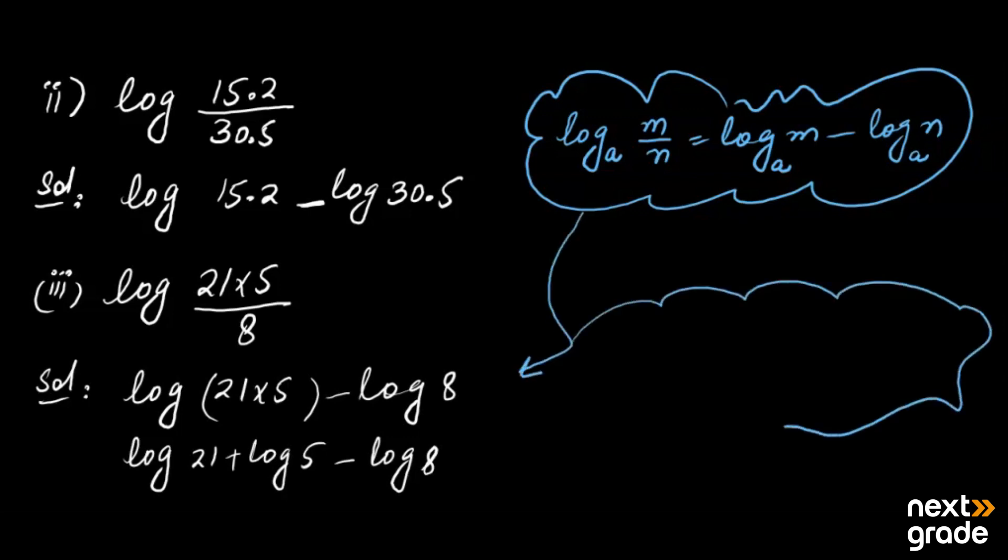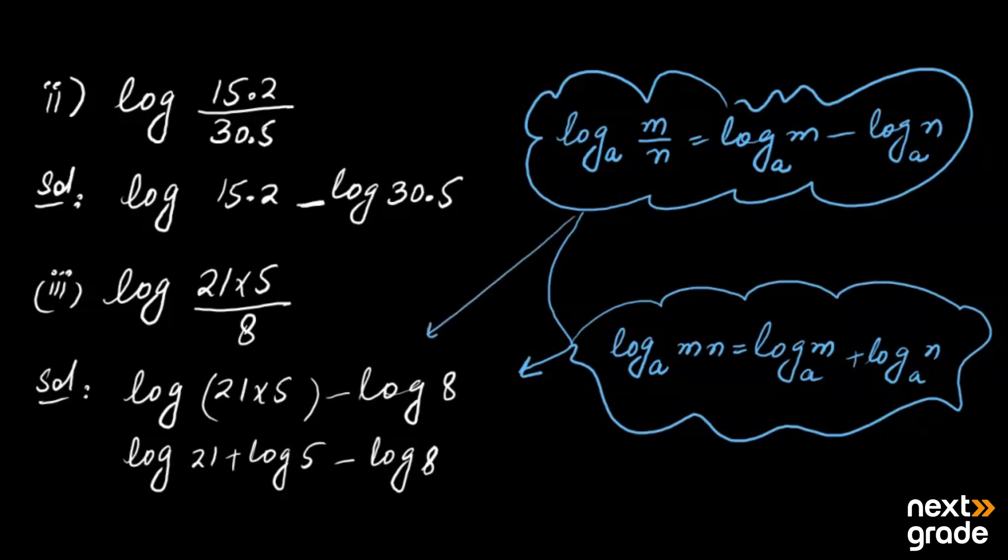The addition property is log of M times N equals log of M with base A plus log of N with base A. Basically, we have applied the two properties. If you want to mention it, then it is best to mention it. Move to the next question.